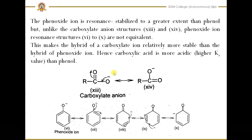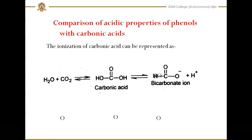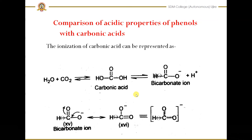Unlike the carboxylate anion, in the phenoxide ion's five resonance structures, the negative charge is located on oxygen in some structures but on carbon in others. Since carbon is less electronegative, those structures are not equivalent. But in the carboxylate anion, the two equivalent resonance structures both place the negative charge on oxygen only. That is why, when comparing acidic properties of carboxylic acids and phenols, carboxylic acids are more acidic than phenols.